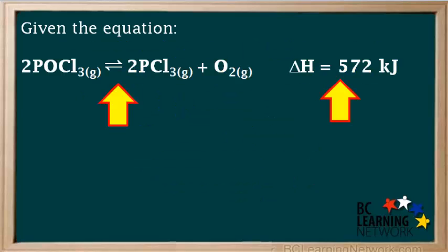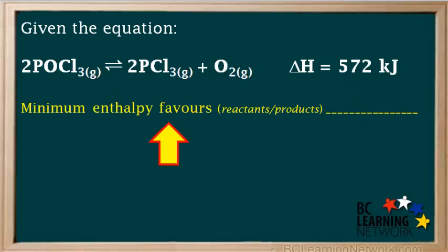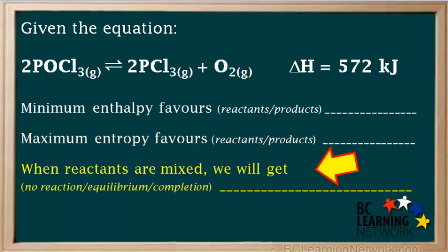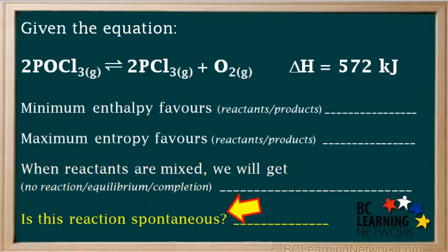Given this equation and delta H value, we're asked whether the tendency toward minimum enthalpy favors reactants or products, whether the tendency toward maximum entropy favors reactants or products, and when reactants are mixed, will we get no reaction, equilibrium, or completion? And finally, we're asked if the reaction is spontaneous or not.